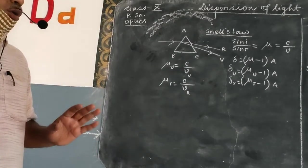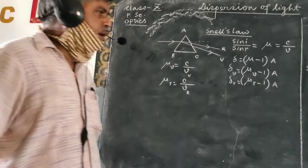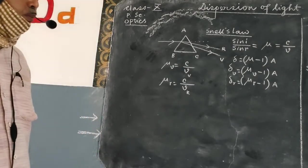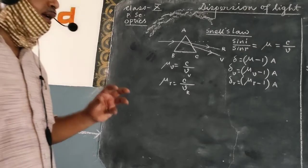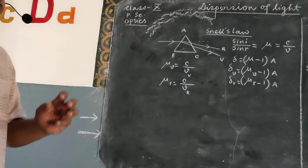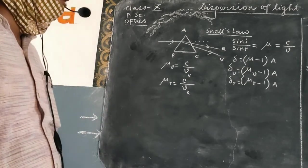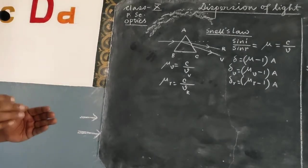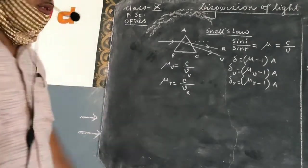Where does it occur or what is the cause of it? In this discussion we shall try to understand the cause, that is known as dispersion of light. Dispersion of light is the splitting out of any polychromatic light into its constituent colors. That means a light in which different colors are present is known as polychromatic light. And when it is made to pass through some dispersive or refractive medium, the constituent colors get separated from one another. That is known as dispersion of light.